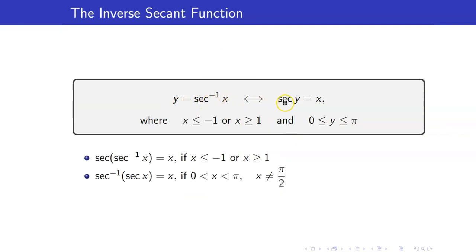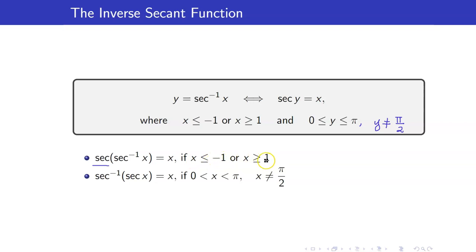Here is the definition of the inverse secant function: y is equal to secant inverse x if and only if secant of y equals x. The x lies in the domain, meaning x is less than or equal to negative 1, or x is greater than or equal to 1. The range is from 0 to pi, excluding pi over 2. We can cancel secant and secant inverse under certain conditions — for secant inverse as the outermost function, the angle must be between 0 and pi, but cannot be pi over 2.